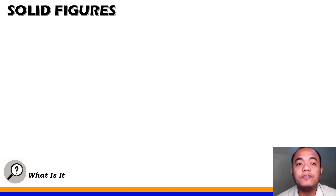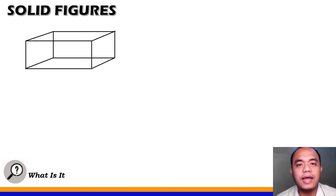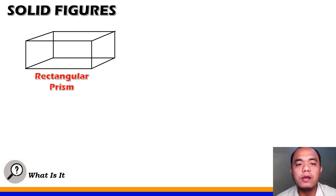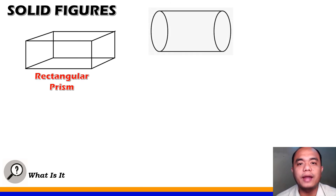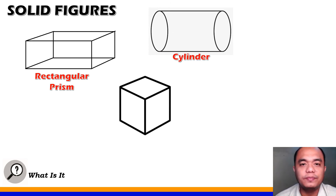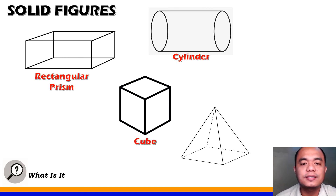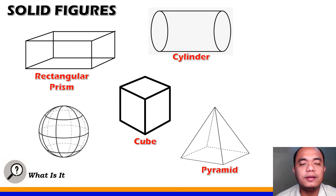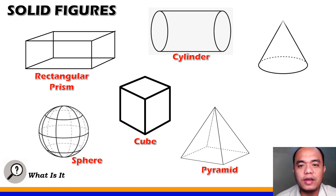Again, let us identify the solid figures we discussed. This is a rectangular prism. This is a cylinder. Next, we have a cube. Next is a pyramid. And that's a sphere.